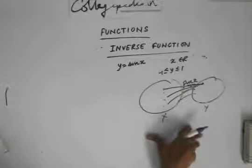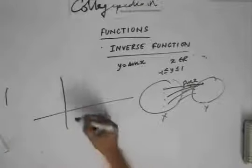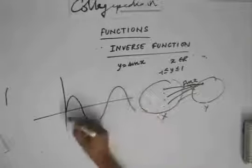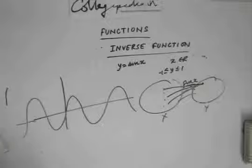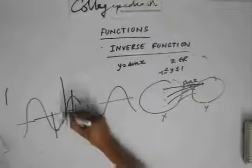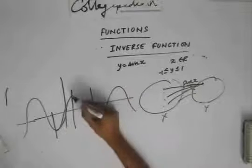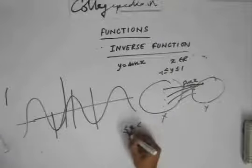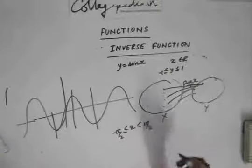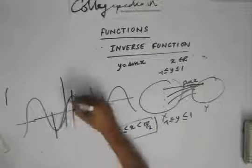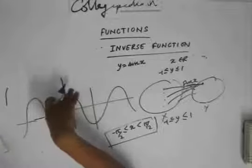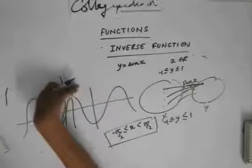But if we restrict the domain, we can find the inverse. The graph of sine x repeats between minus one to one. We take only one chunk — say x lies between minus pi by two to pi by two — and then y again lies between minus one to one. By restricting the domain to minus pi by two to pi by two, the function becomes one-to-one and onto.